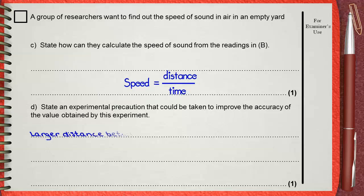larger distance between shooter and observer makes the time longer for the sound to reach the observer. The longer time means more accuracy and less uncertainty in the measured time.